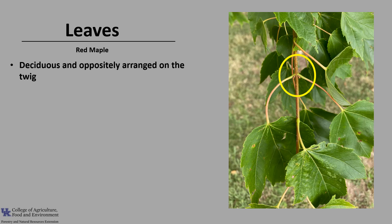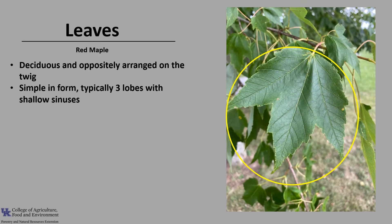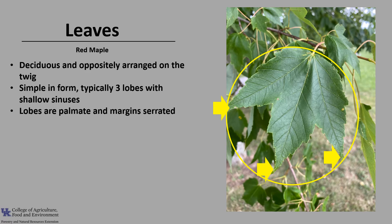Red maple is deciduous with leaves oppositely arranged on the twig, as you can see in the photo. The leaves are simple in form, meaning made up of one blade, and the leaves have three lobes with shallow sinuses — those are the indentations between the lobes. The lobes are palmate, which means the mid ribs radiate from one point at the base of the leaf. You can see in the photo this leaf has three mid ribs that start at the base of the leaf at the petiole, and the margins are serrated or toothed.